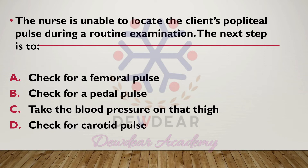The nurse is unable to locate the client's popliteal pulse during a routine examination. The next step is to: check for a femoral pulse, check for a pedal pulse, take the blood pressure on that thigh, or check for carotid pulse. The correct answer is option B — check for a pedal pulse.